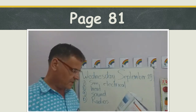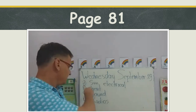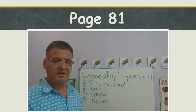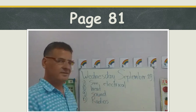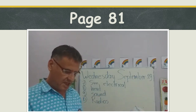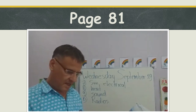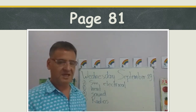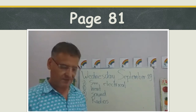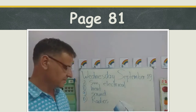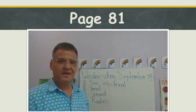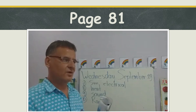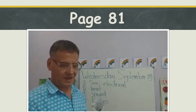One more time: number seven — solar panels change light energy from the sun into electrical energy. Number eight — irons and toasters change electrical energy into heat energy. Number nine — televisions change electrical energy into light and sound energy. Number ten — radios change electrical energy into sound energy. Fill in the answers and we are finished with 'What have I learned about energy?' Tomorrow we will do a science activity.